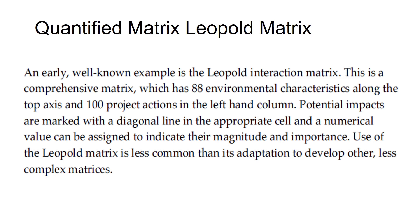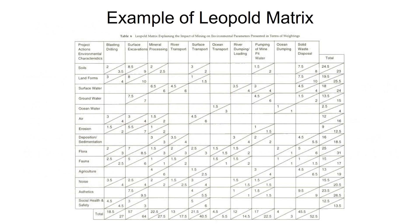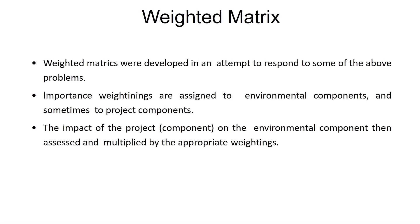These are comprehensive metrics with 88 environmental characteristics along the top axis and 100 project actions in the left-hand column. We represent potential impacts using diagonal lines. Numerical values can be assigned to indicate their magnitude and importance, using dots. This is an example showing the 88 environmental parameters and 100 project actions. This is the Weighted Metrics.